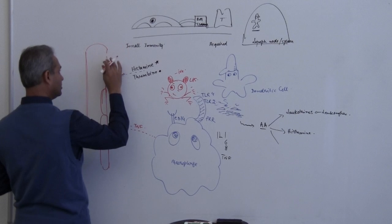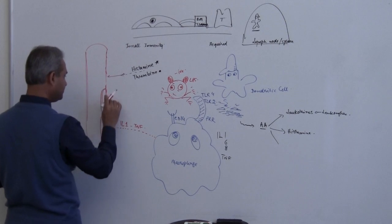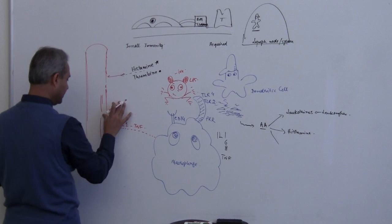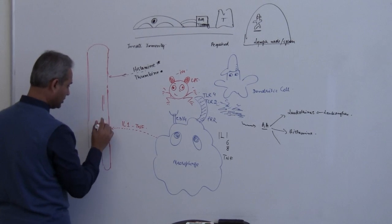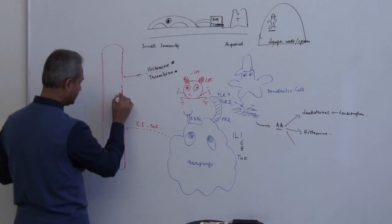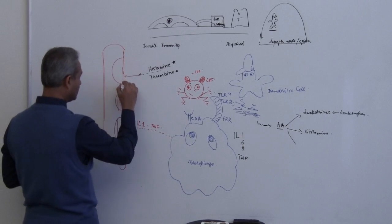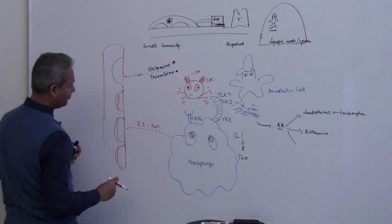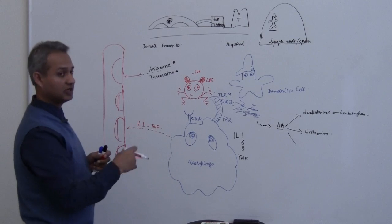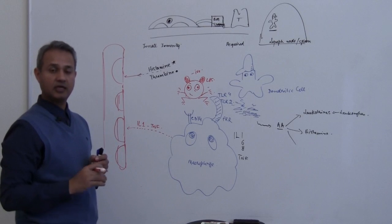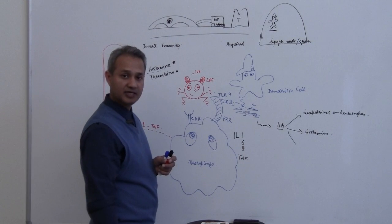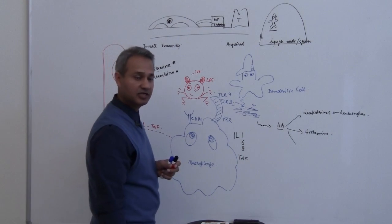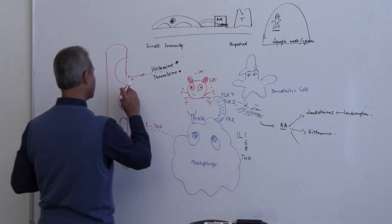So what happens is that the endothelial cells, they contract as a result of the chemical mediators coming and attaching to them. Why are they contracting? Because this is a special case here. The tissue is under stress. Tissue is being damaged and there are chemical substances which are coming.